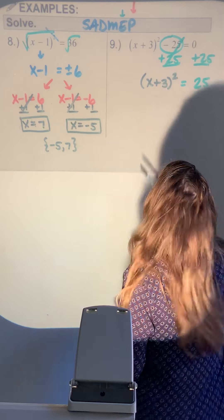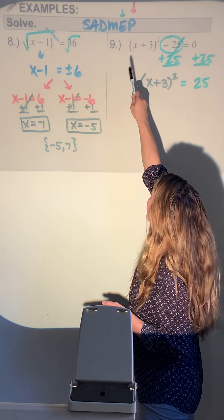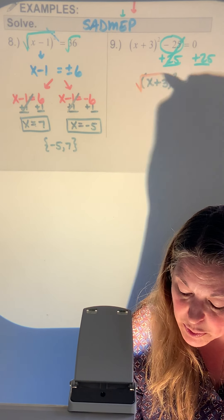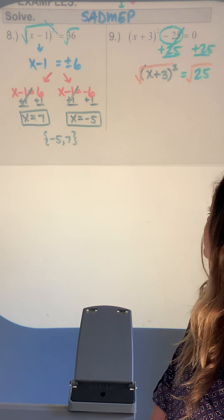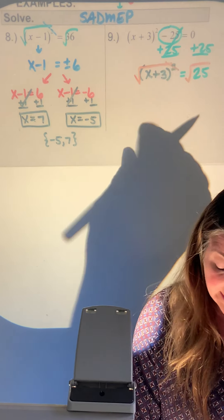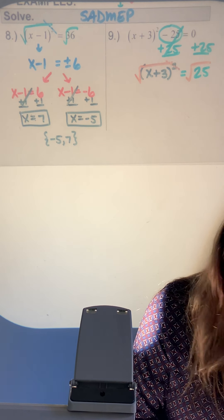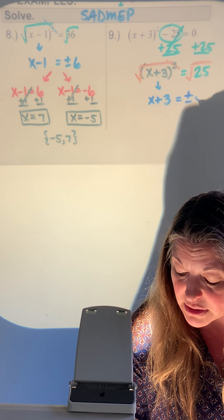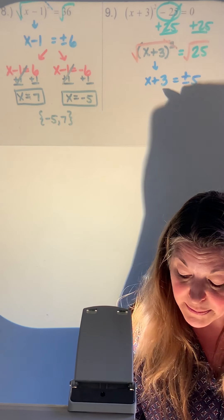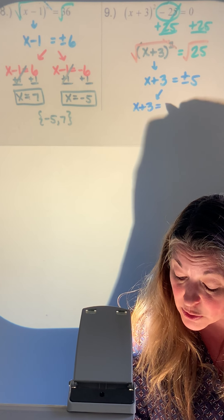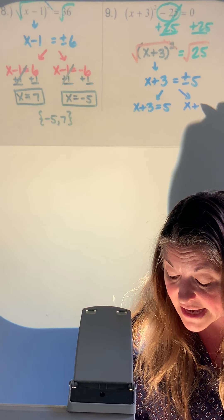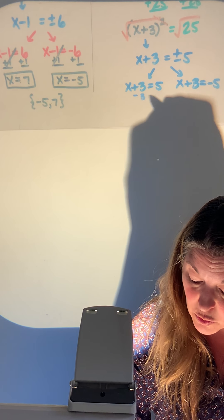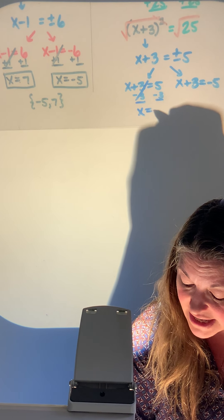Nothing extra in front to divide or multiply, so go ahead and square root both sides. Square rooting knocks out the exponent of 2, and x plus 3 pops right out, unchanged. That gives a plus or minus 5. Split into x plus 3 equals 5, and x plus 3 equals negative 5.